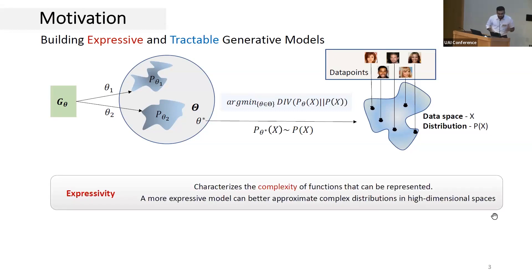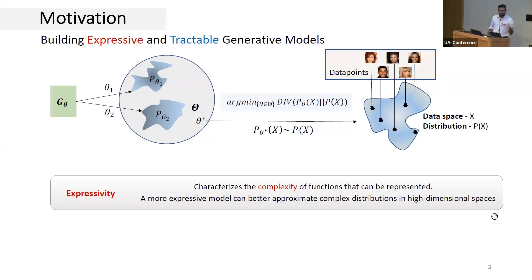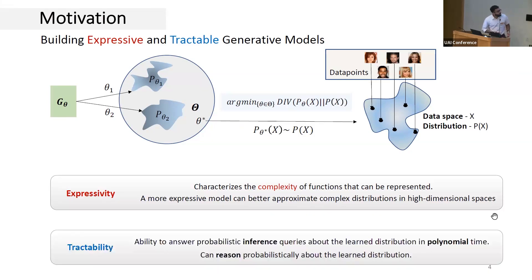Building models that can effectively represent as well as efficiently reason about the unknown underlying distribution that generated a given set of data points has been an important and longstanding goal in AI. When we build such models, there are two key characteristics that we typically look for. First, we need them to be expressive enough and have the flexibility to model complex probability distributions in high-dimensional spaces.